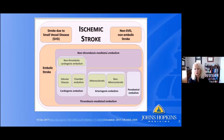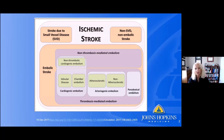There's non-thrombosis mediated embolism and thrombosis mediated embolism. For example, there are emboli that can come from the heart, emboli that can represent arteriogenic plaque, and then there's a paradoxical embolus — where an emboli crosses from the venous system over to the arterial system. Within this catchment area of embolic stroke, there are different ways to think about the mechanism, and this is important because mechanism dictates treatment.